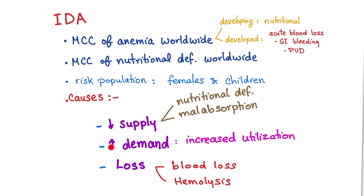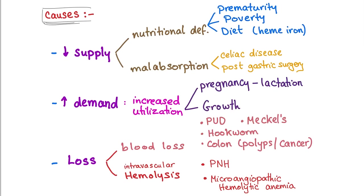Decreased supply: such as nutritional deficiency or malabsorption — either I'm not getting enough iron, or I'm getting enough iron but I cannot absorb it. Increased demand: such as increased utilization — I need more and more iron. Loss: such as blood loss or hemolysis, where the RBCs are being destroyed.